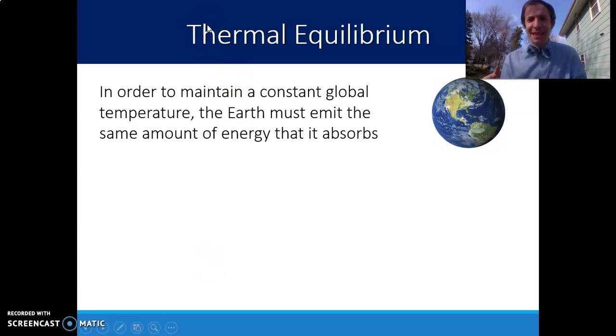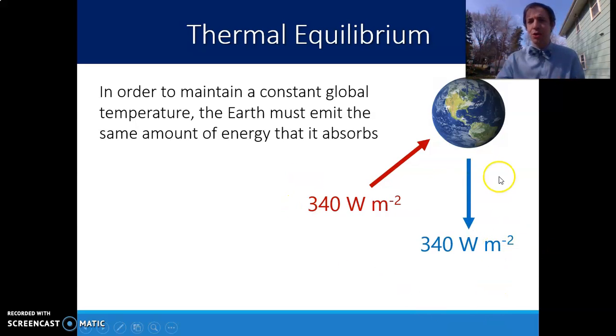So ultimately where this is going to be leading us to is what we're trying to find is some sort of balance. In order to maintain a constant global temperature, you can't be receiving more energy than you're emitting. One way that we are emitting energy there was just reflecting it back. We're going to talk about some other ways as well. But if we have an average intensity of 340 watts for every square meter that's coming into our planet, for our planet to not noticeably change its temperature up or down, we have to find a perfect equilibrium where the amount of energy leaving the planet is also 340 watts per square meter on average.